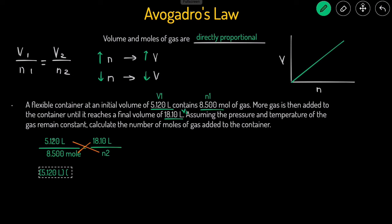So then the 5.12 will go with the N2, and then the 18.1 will go with the 8.5. Then to isolate the N2, we're going to divide both sides by 5.12 liters. And then that will get rid of the 5.12 liters. The liters will also cancel out on this side.